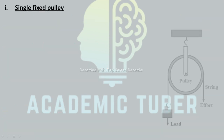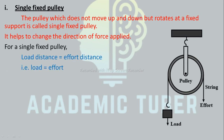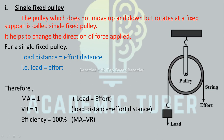Single fixed pulley: the pulley which does not move up and down but rotates at a fixed support is called a single fixed pulley. It is used to change the direction of the force applied. For a single fixed pulley, load distance equals effort distance, so load equals effort. Therefore MA equals 1, VR equals 1, and efficiency equals 100% since MA equals VR.